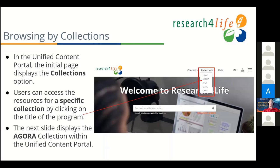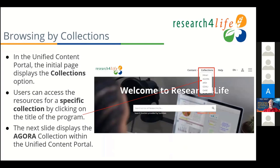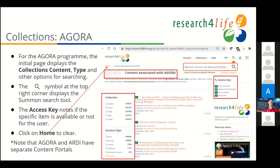We've clicked on Agora and this is what displays. For the three programs you'll see a portal that says Welcome to Agora, but this is through the Unified Content Portal. It shows you content associated with Agora. If you click on Home, you get out of Agora and go back to the Unified Content Portal. You can see in Collections you can click on Agora that way too.